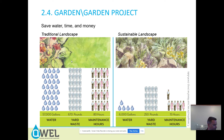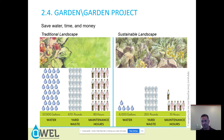What they found was that the traditional landscape, in a year's period, used 57,000 gallons of water, 670 pounds of yard waste were generated, and 80 hours of maintenance was required. The sustainable landscape required 6,000 gallons of water, produced 250 pounds of yard waste, and only required 15 hours of maintenance. There's a huge difference in water use, and that's why this is important when it comes to irrigation — if we can have a sustainable landscape, it lends itself better to less water being used and less yard waste produced.